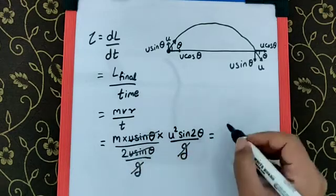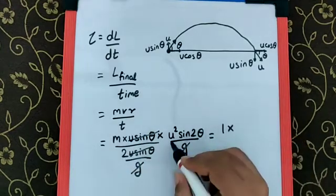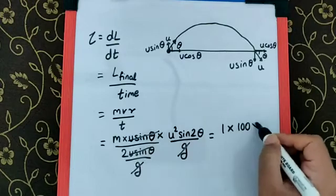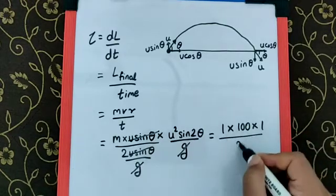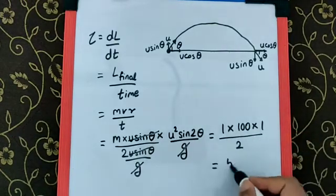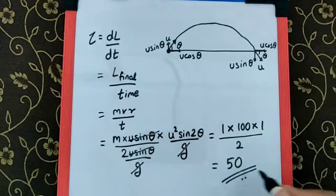So basically, substituting m as 1, u given as 10, so square will be 100, sine 90 as 1, upon 2, the final answer is going to be 50 Newton meter.